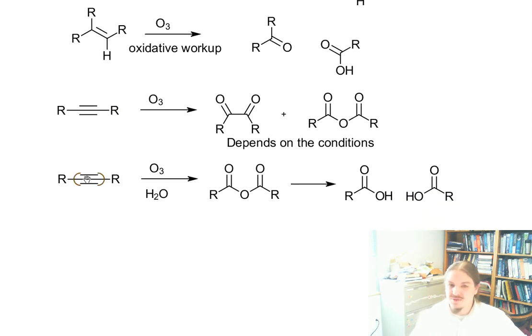In ozonolysis of alkynes, we have three carbon-carbon bonds, so we're going to make three carbon-oxygen bonds. But oxygen can only have two bonds, so we can't have a carbon-oxygen triple bond. We can have a carbon-oxygen double bond and then a carbon-oxygen single bond at the same place.